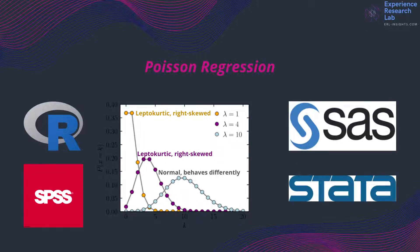Several data analysis tools support Poisson regression. Among others are R, SPSS, SAS, and STATA.